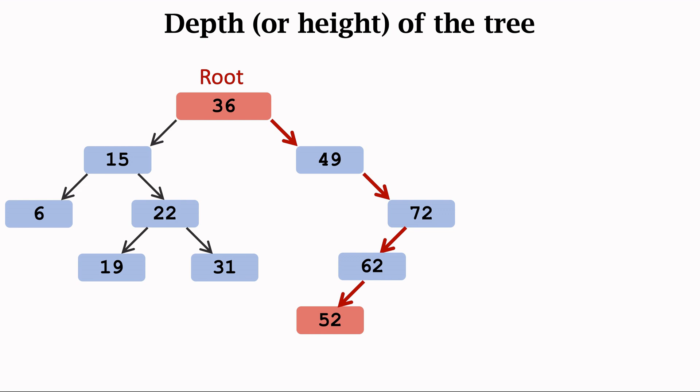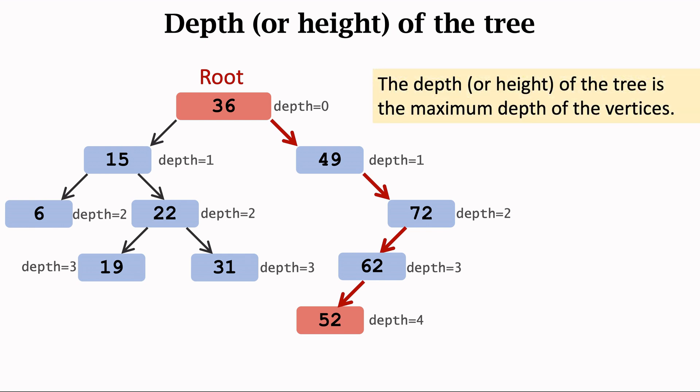A tree has many vertices. Each vertex has a depth. The depth of the tree is the maximum depth of the vertices. The depth of the tree is also known as the height of the tree.